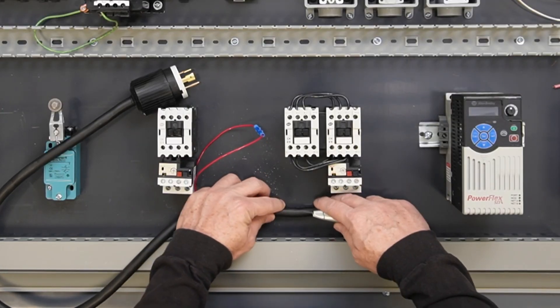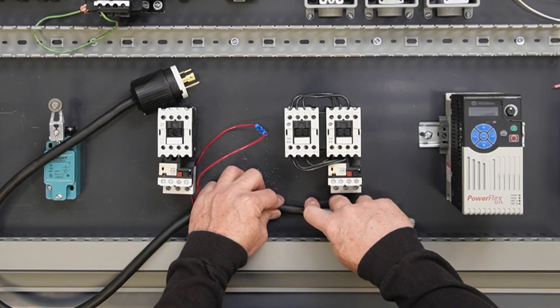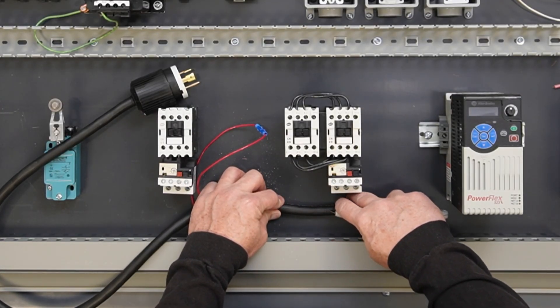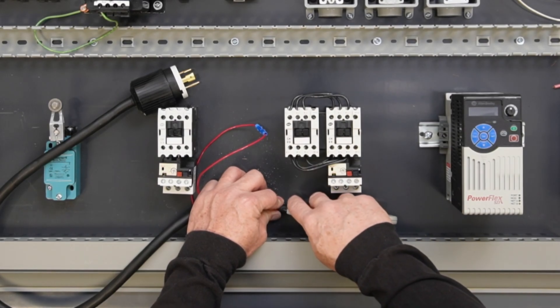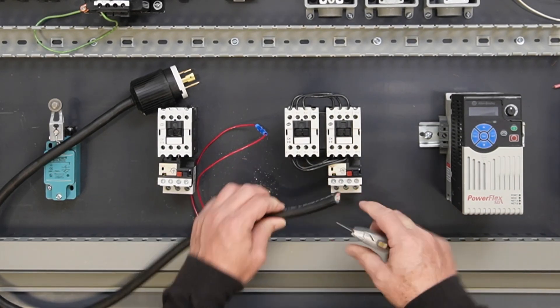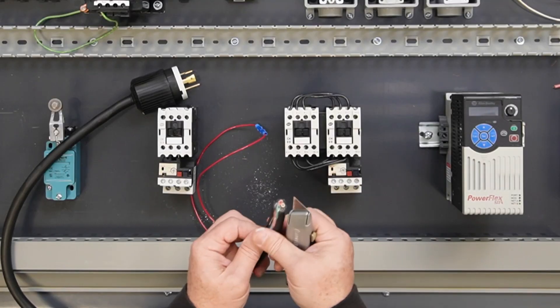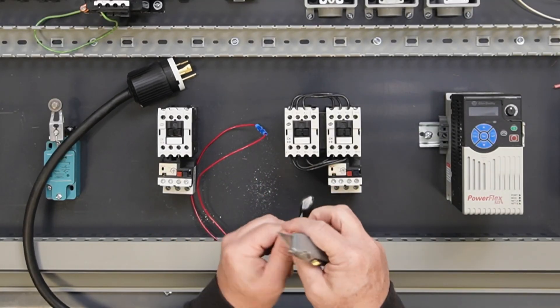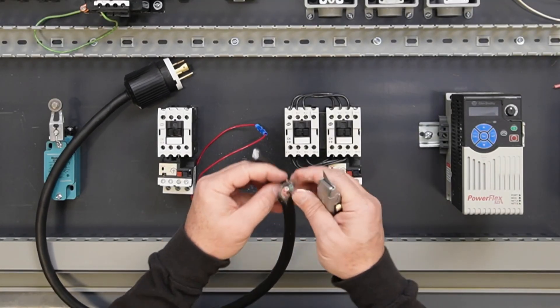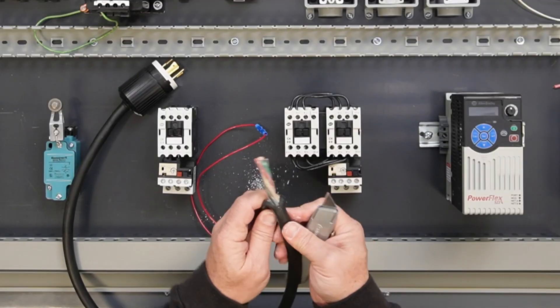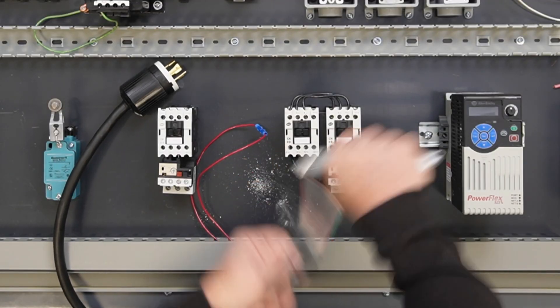Remove a portion of the cover from the opposite end of the cord. Since this end is not being installed into a plug or receptacle, a longer cut may be made. The cut shown is approximately three inches. Carefully peel back and trim the cover once it is split.